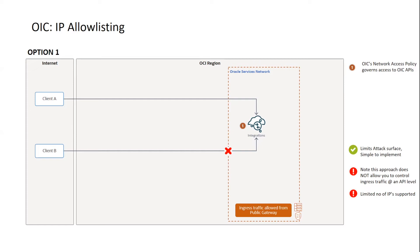There are a couple of limitations here. The first and most significant one is that the OIC network access policy has a limited number of IP addresses it can support — today that's 15, though that could change in the future. The other disadvantage is that you cannot limit using this approach at an API level or a path route level; it will apply to all of your OIC endpoints.